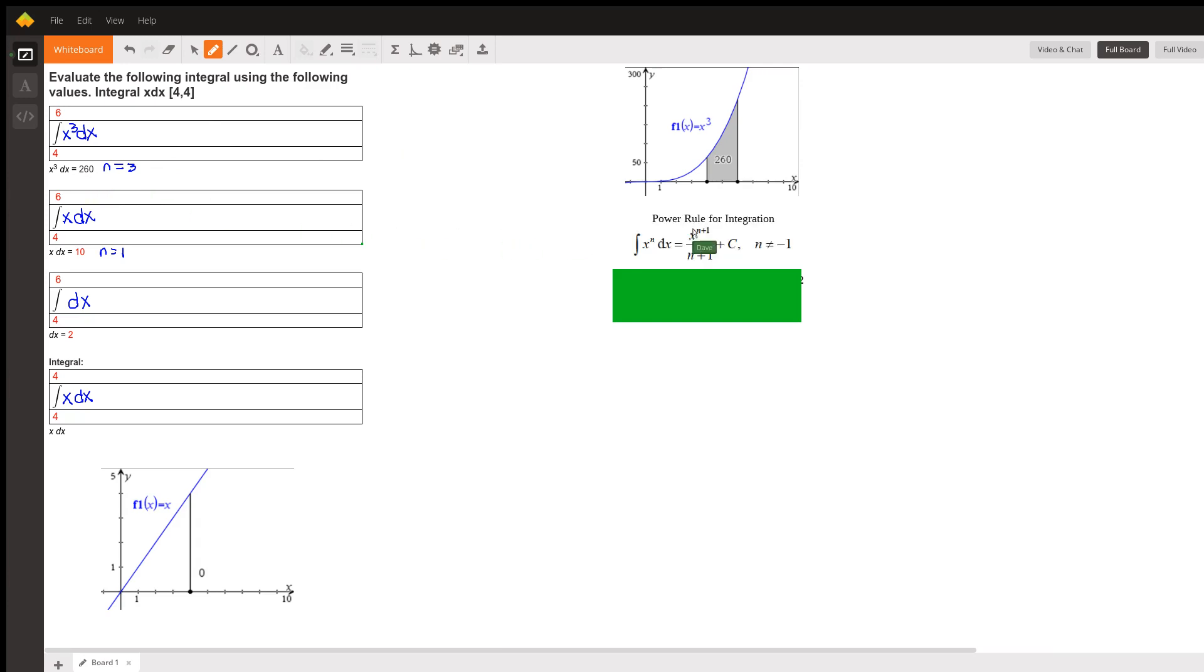To do this analytically, we're going to use the power rule for integration, which states that the integral of x to the n dx is equal to x to the n plus 1 over n plus 1 plus c. We don't need plus c in this case, because this is a definite integral. It has bounds. So we don't have to write plus c for our answer. And of course, n cannot be equal to negative 1. Otherwise, we would have 0 in our denominator.